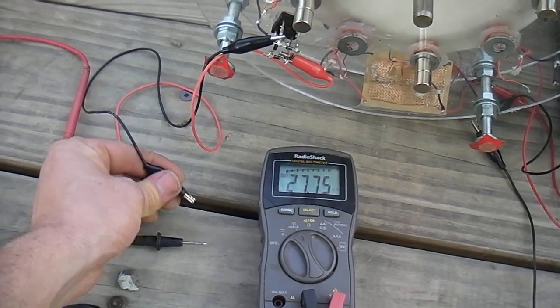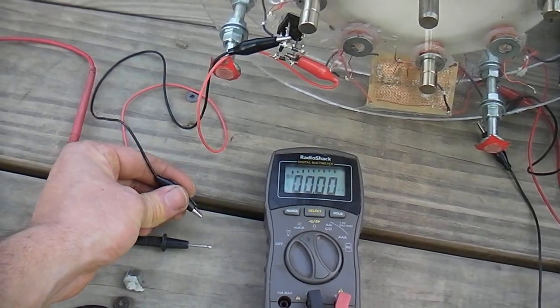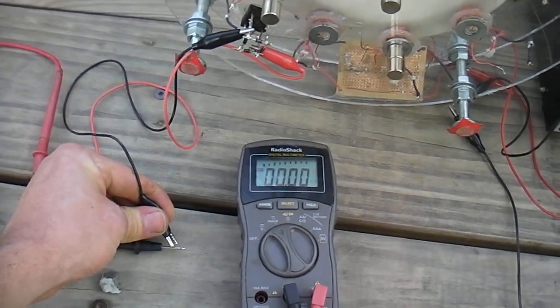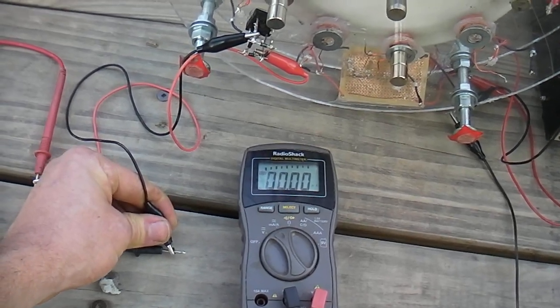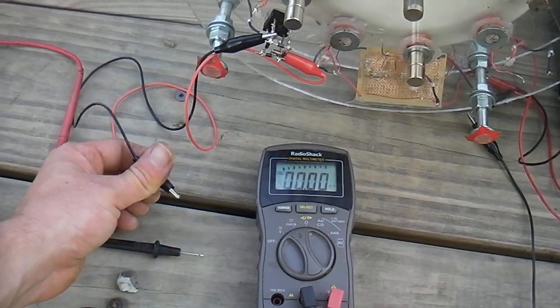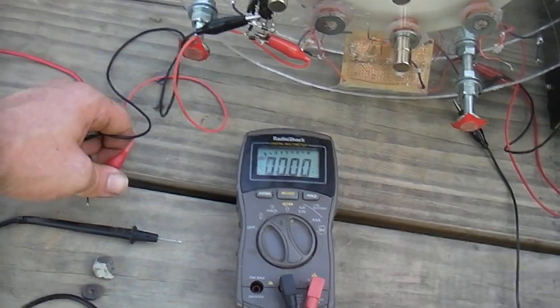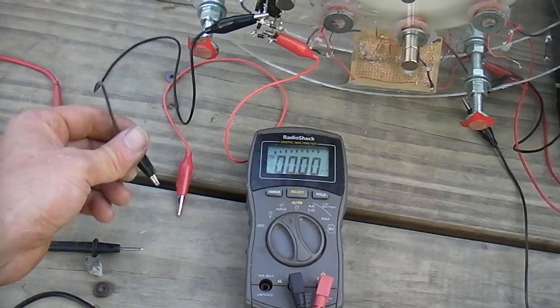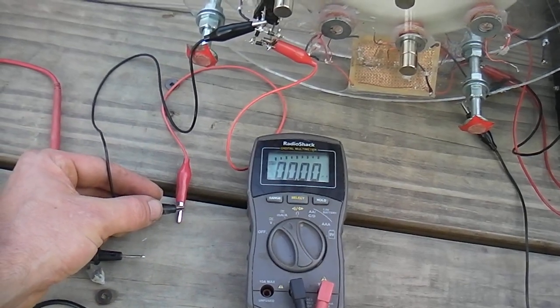And I will show you the difference between, so here it is, no load. There it is with a 30 milliamp load. There's a slight detectable slowdown on the rotor, maybe, but it's very little.